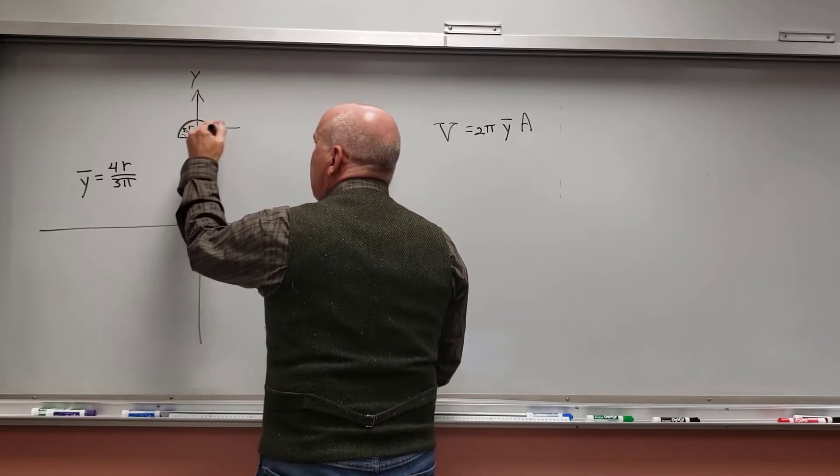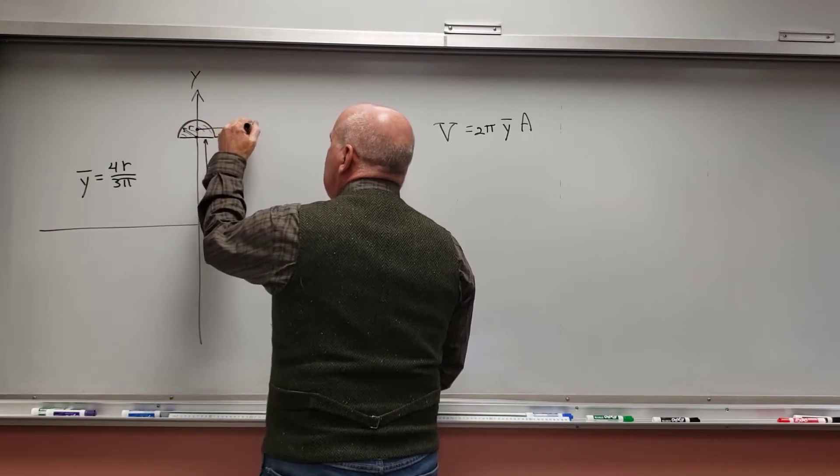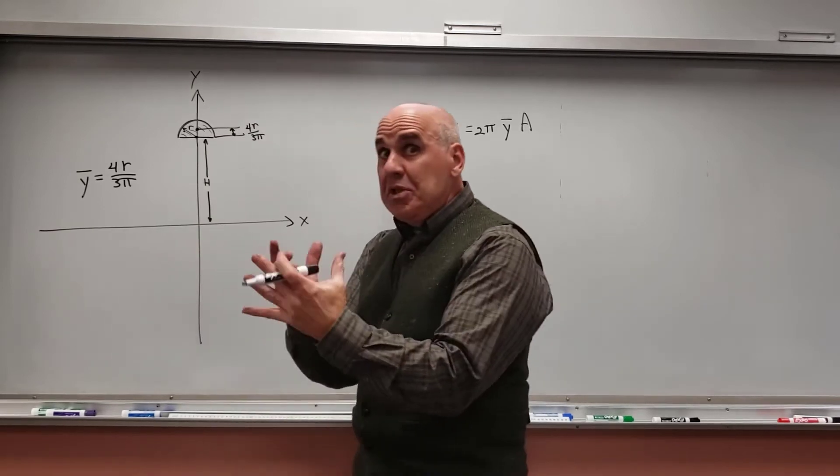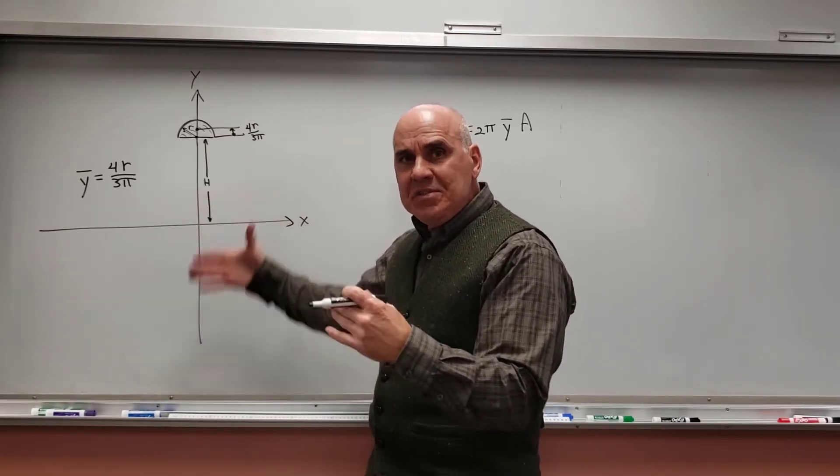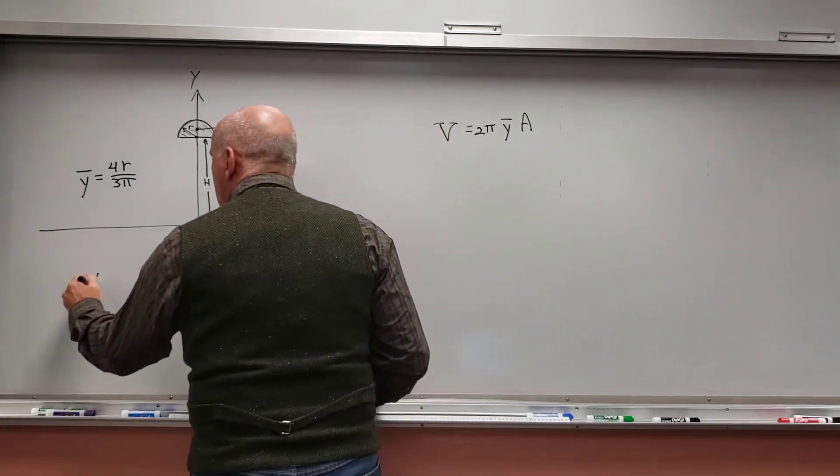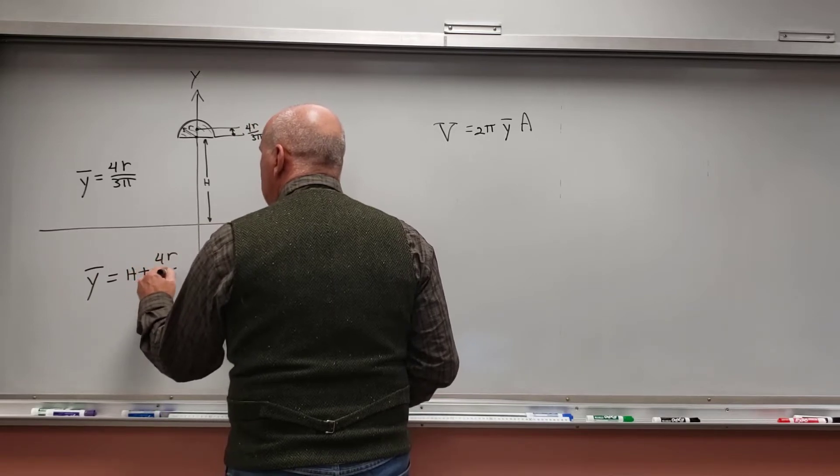So it's someplace up here, and this distance right in here is 4 times the radius over 3π. And so y-bar, the real y-bar in this system, is h plus that. So really, y-bar is equal to h plus 4r over 3π.